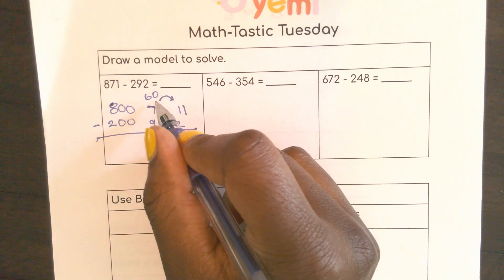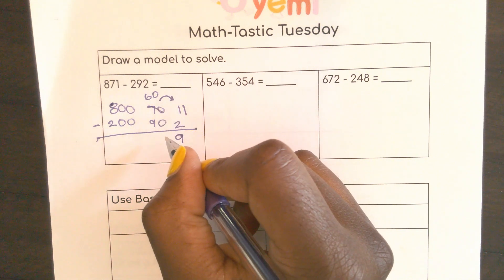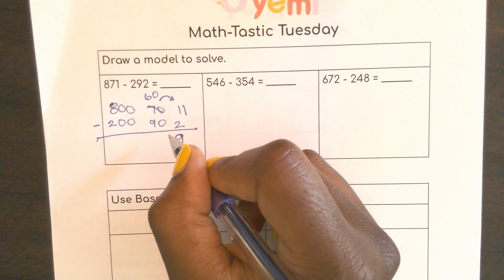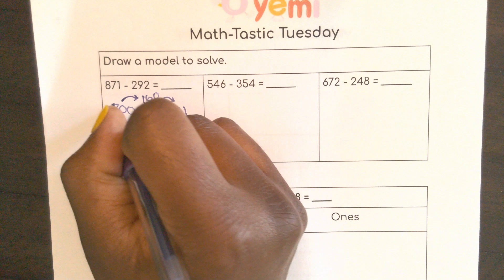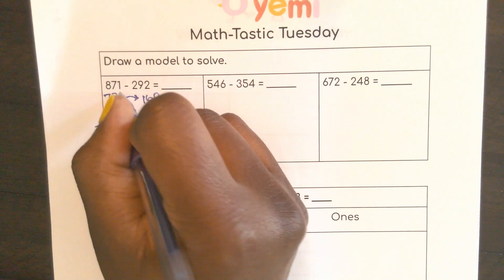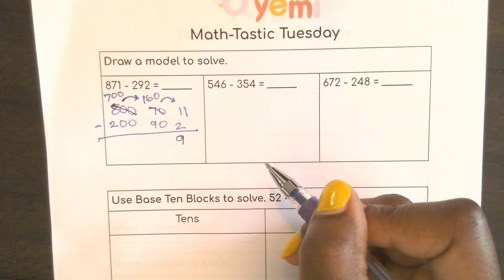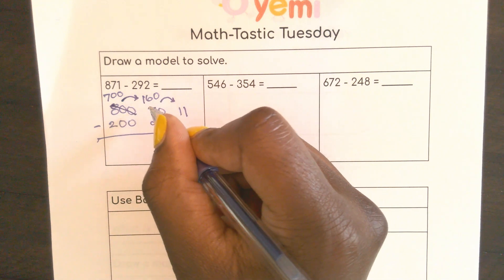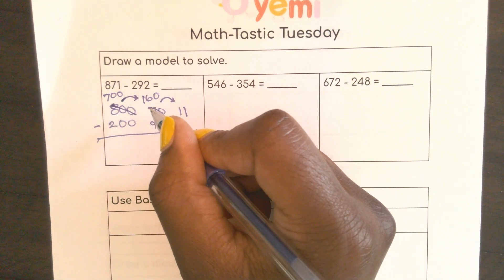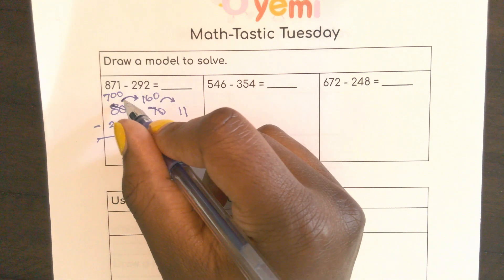If I have 60 I'm not going to be able to take away 90. So here I have to move 100. See how I had 60 there? I moved 100 over there. 100 plus 60 is 160. And then I ended up with 700.